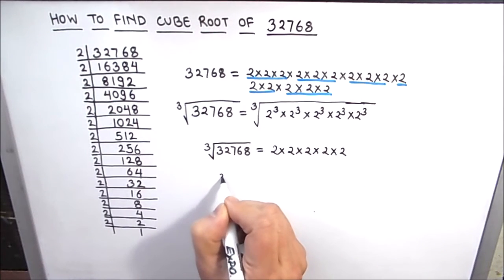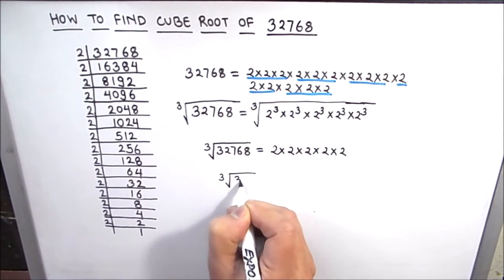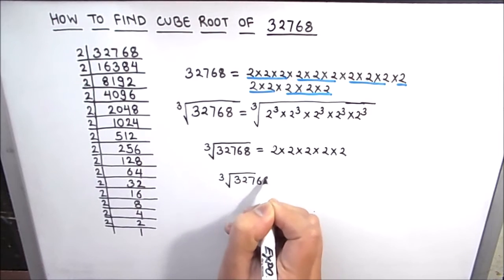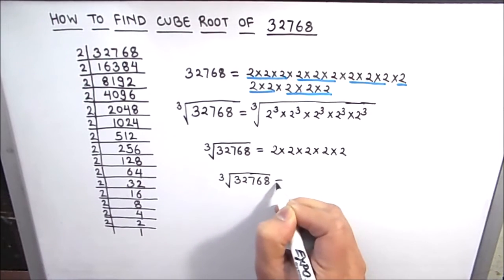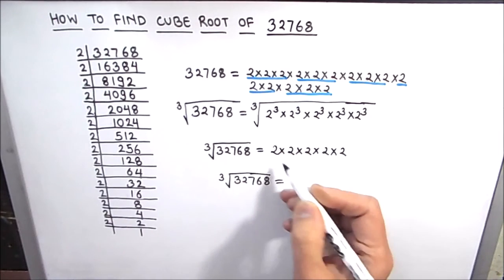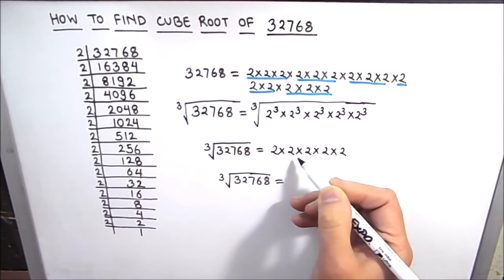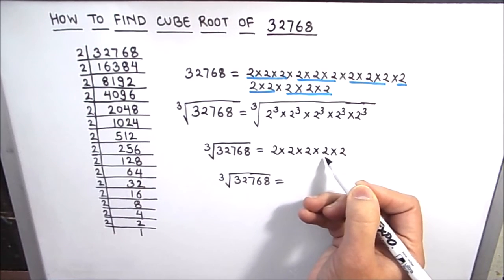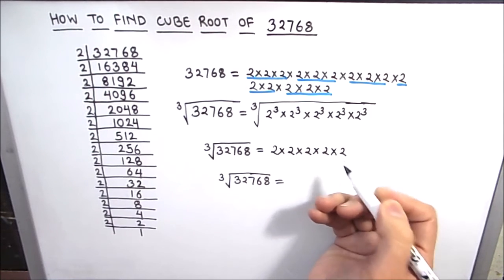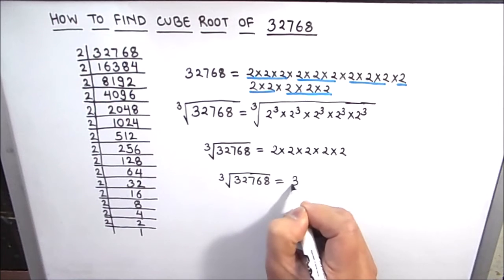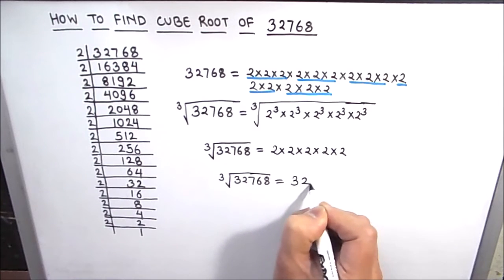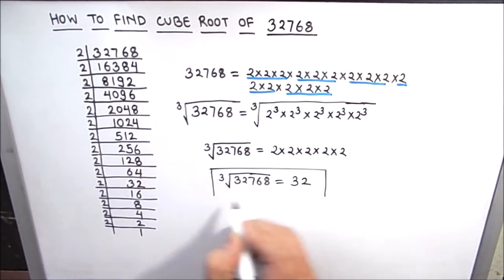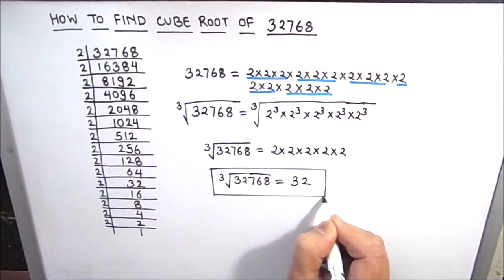So the cube root of 32768 is equal to 2 times 2 is 4, 4 times 2 is 8, 8 times 2 is 16, and 16 times 2 is 32. So the cube root of 32768 equals 32. This is our final answer and we box the answer.